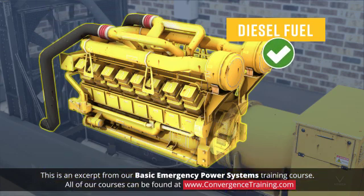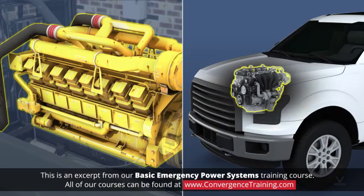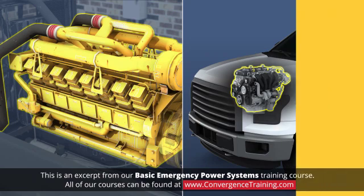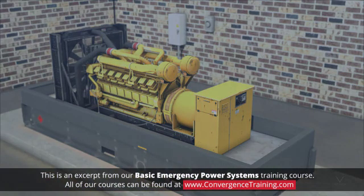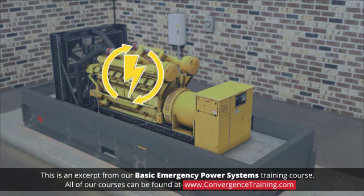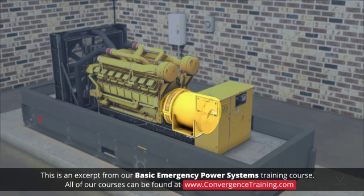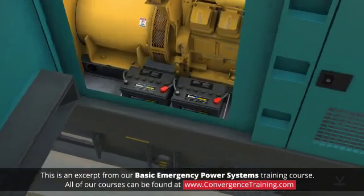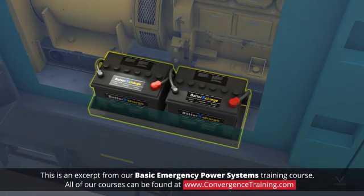Diesel fuel is preferred because it is readily available, easily stored, and not easily ignited. The internal combustion engines used in generators are very similar to the engines used in your car or truck, with just a couple of modifications. Those modifications allow the generator engine to start up very quickly and to run at a fixed speed for many hours or days without undue wear and tear on the engine.